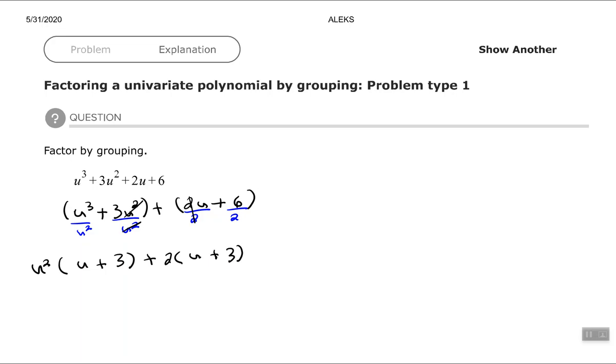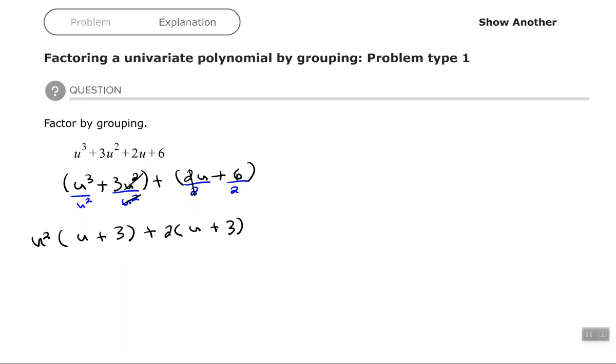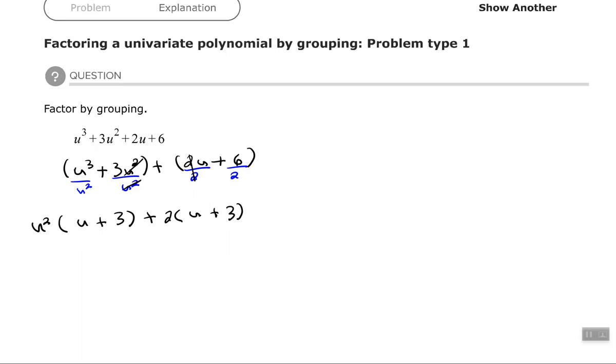Now, if you did this part correctly, then the binomials that you see in parentheses should be the same as each other. And they are. So I have a common binomial now of u plus three. So my final step is to factor out the common binomial.